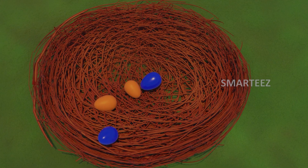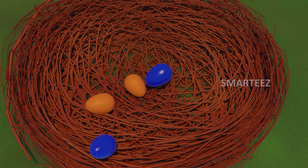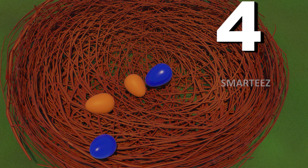Let's do division with eggs. How many of them are here? One, two, three, four.